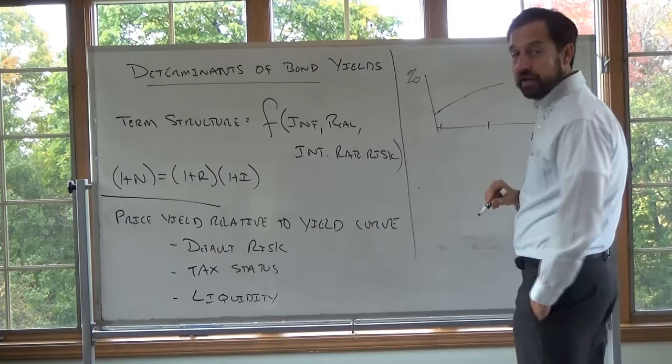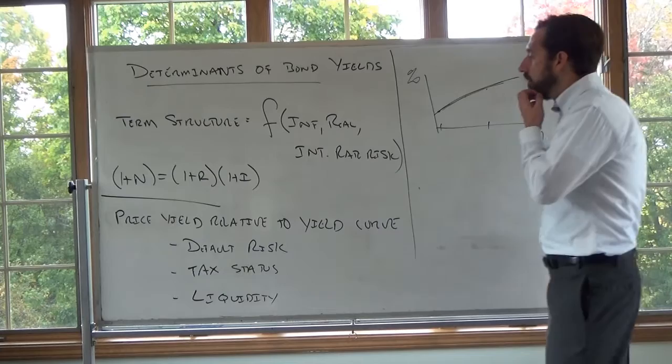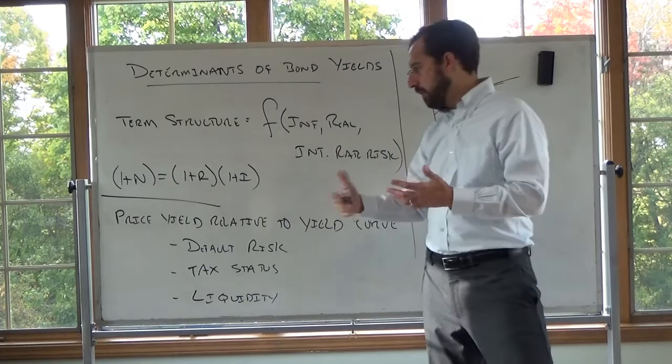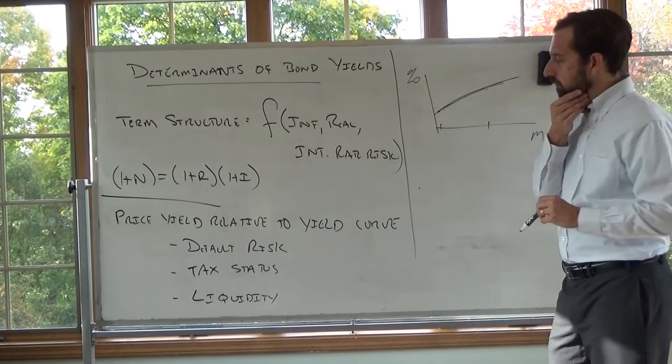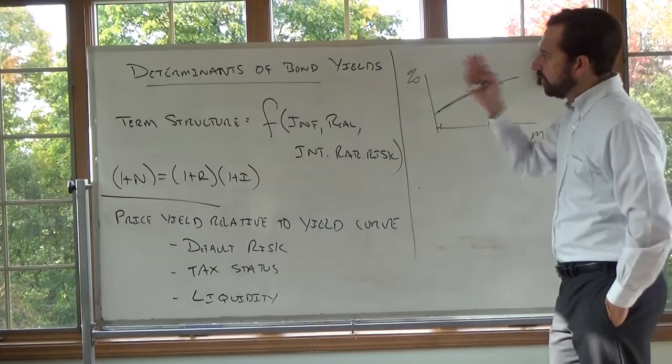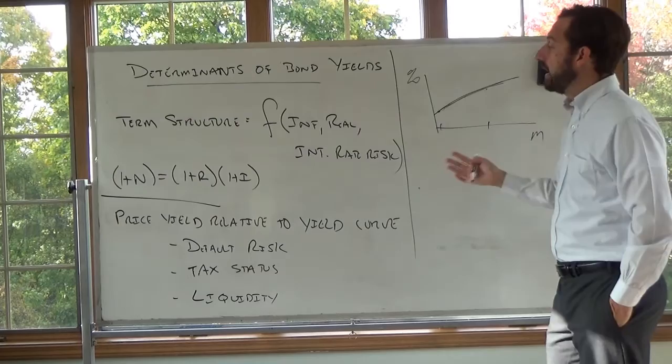The term structure gives us the yield of maybe a one-month zero, the yield of a one-year zero, and so on. This is the pure time value of money. Because these are zeros, you buy this bond and you're guaranteed that yield to maturity. If you remember from earlier videos, buying a coupon bond, you're not actually guaranteed the yield to maturity. So the term structure of interest rates gives us the pure time value of money.